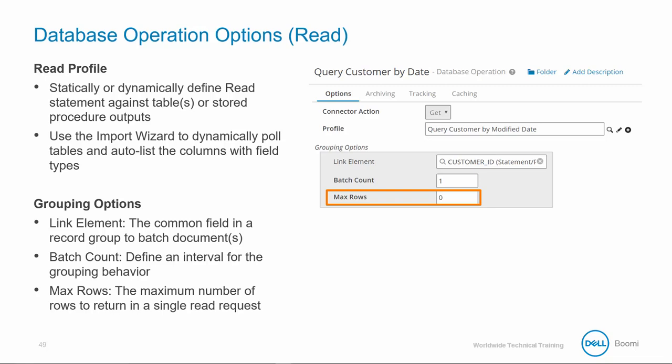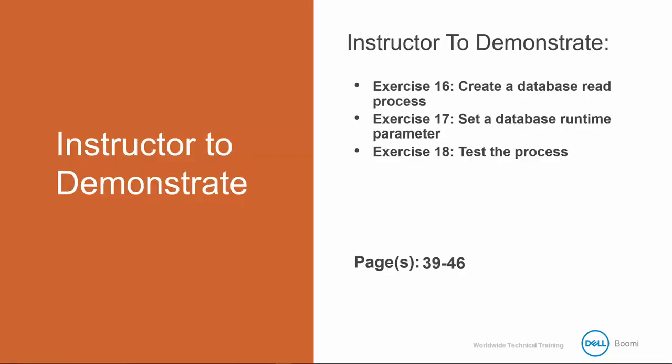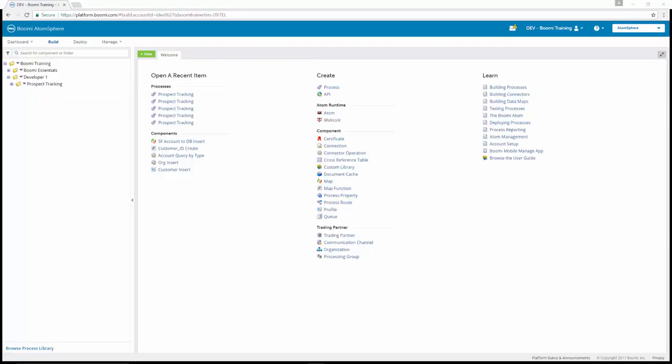You can read in limited sets of data and flag them as completed using a database write command to prevent them from being picked up during the next execution. The default of zero means all. I'm going to walk through exercises 16 through 18. Exercise 16 is create a database read process. Exercise 17 is set a database runtime parameter. Exercise 18 is test the process. These exercises deal with our second process, Daily Customer Wins, which builds a notification process and sets flags in both Salesforce and the database to complete the account record synchronization.